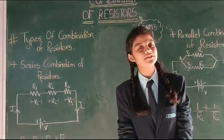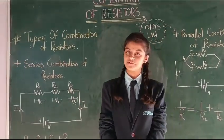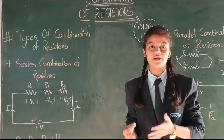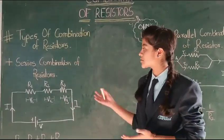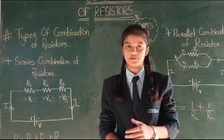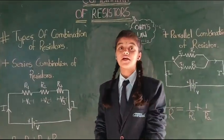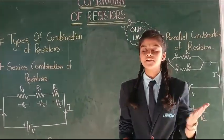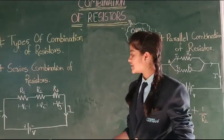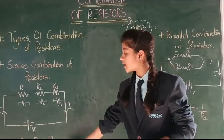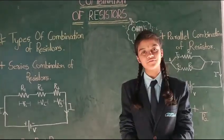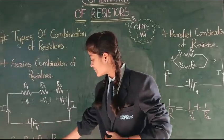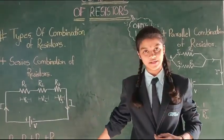Let us understand what is series combination of resistors. When the resistors are connected end to end, it is called series combination of resistors. In series combination of resistors, the current is constant but the voltage varies. There is a formula for series combination of resistors, which is R equals to R1 plus R2 plus R3.